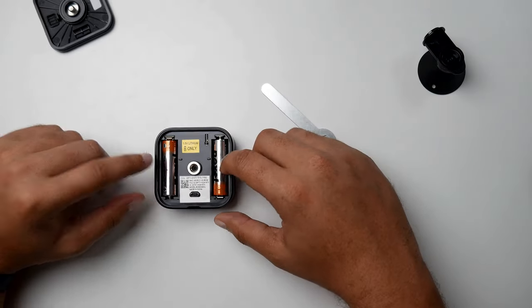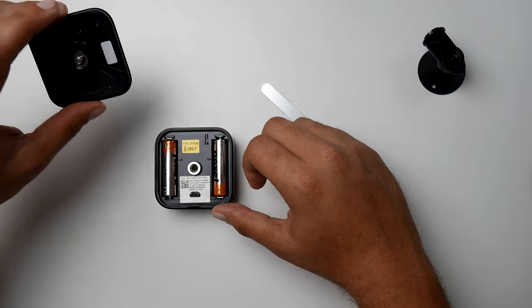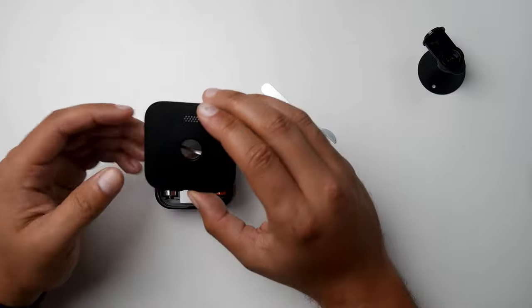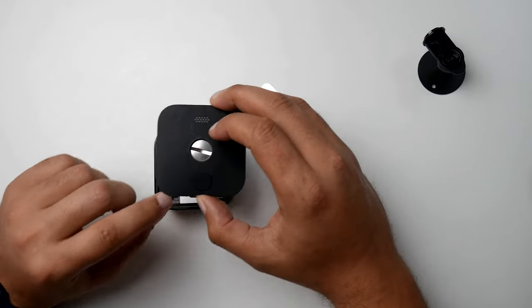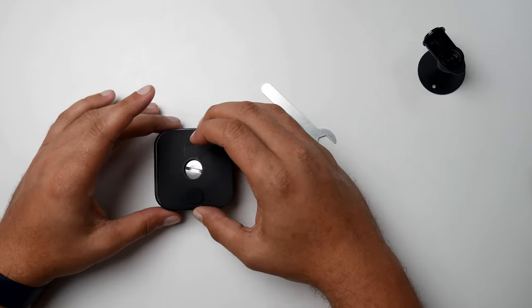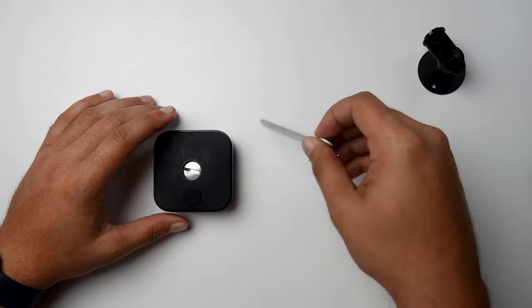So once we get these changed we need to grab the back and just reinstall it. We want to make sure that this USB lines up with our USB access in the back of the camera.